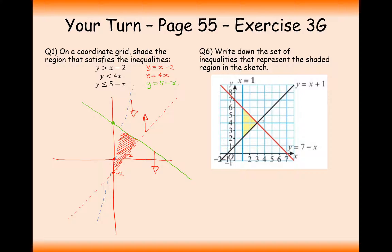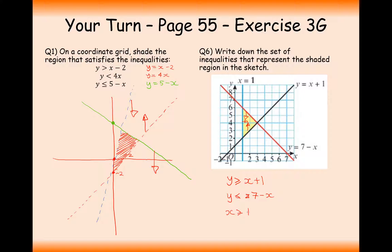Moving on to question 6, where we construct the inequalities ourselves from given lines. Since they're all solid lines, they'll all include a greater-than-or-equal-to component. The black line gives y greater than or equal to x plus 1. The red line gives y less than or equal to 7 minus x. The blue line gives x greater than or equal to 1.